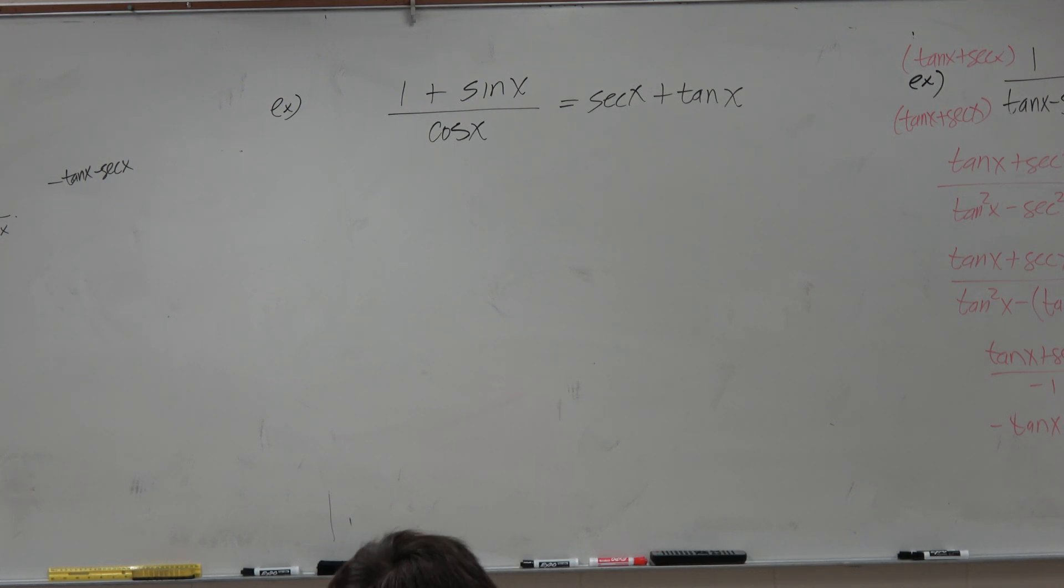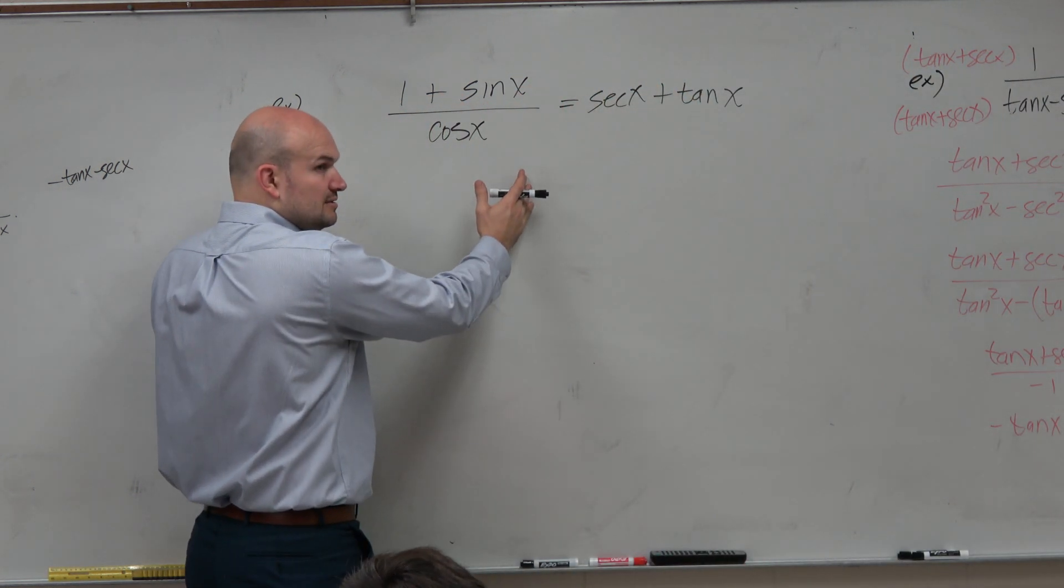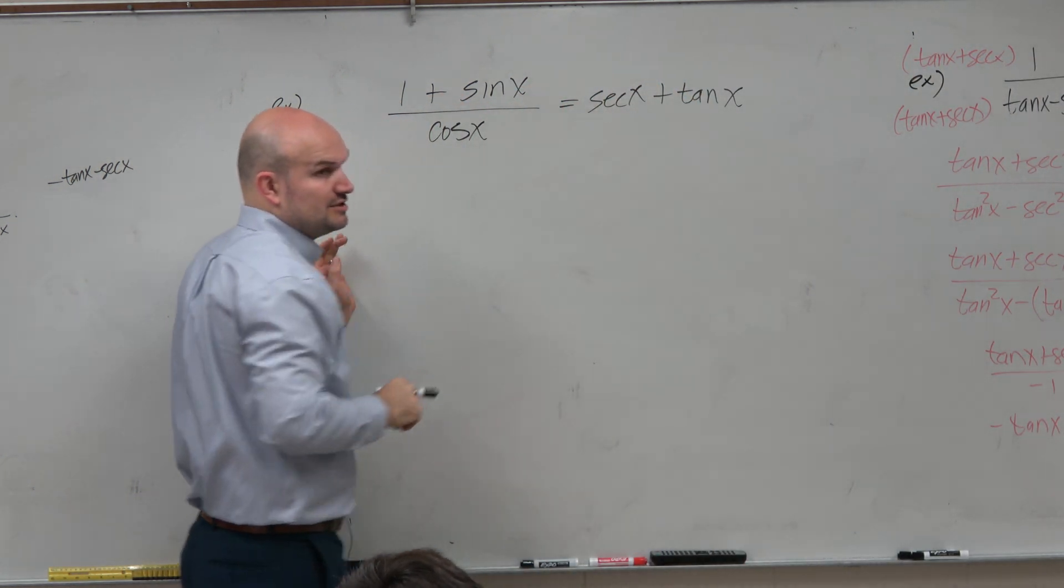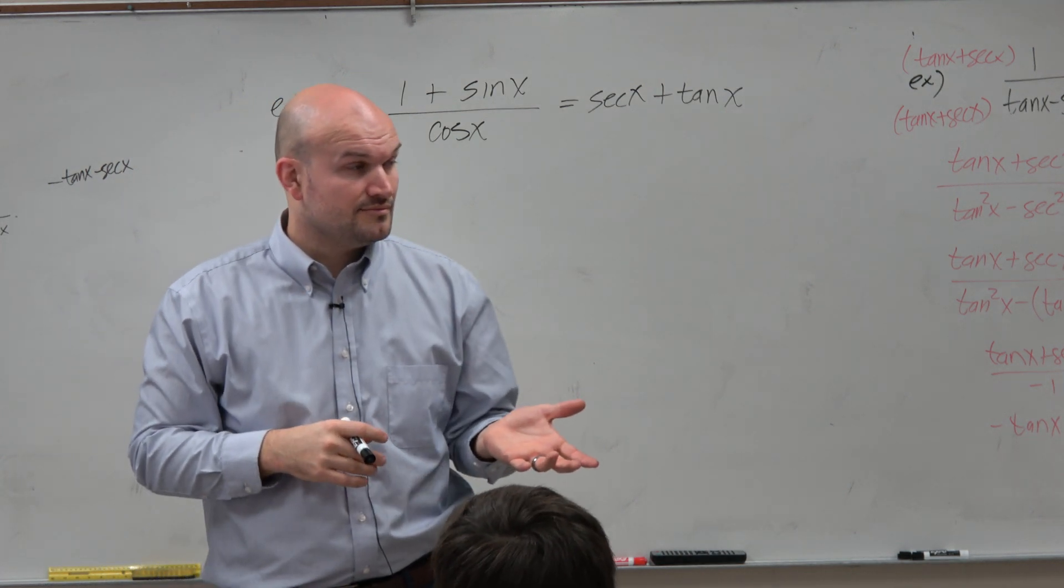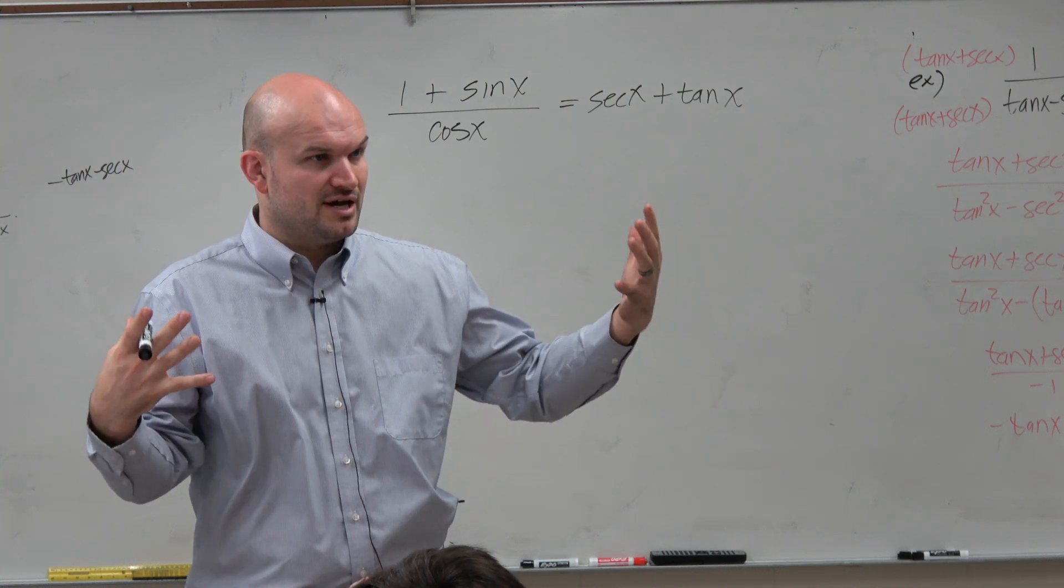There's a couple different ways we could do this. One way is to eliminate. We know on the left side we have a fraction. The right side we don't have a fraction, correct? So it's probably easier to eliminate a fraction rather than to create a fraction.